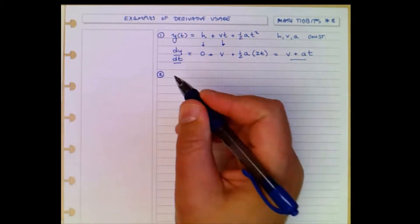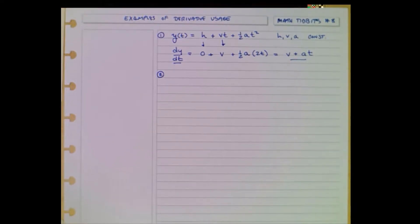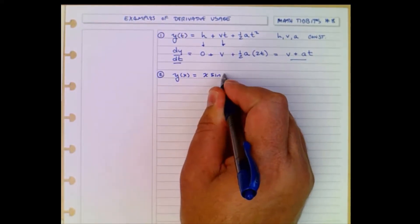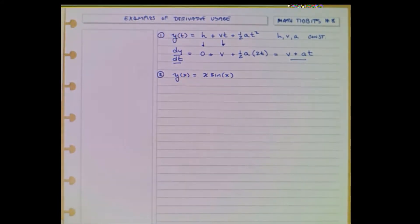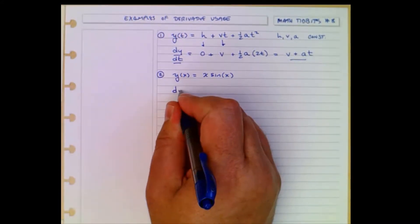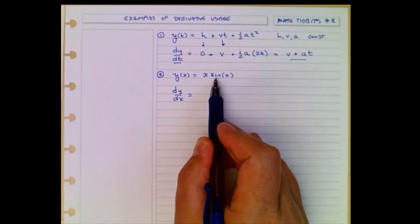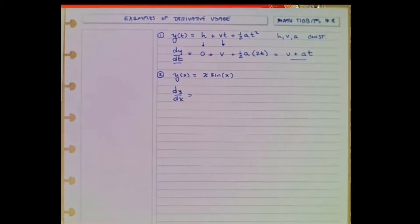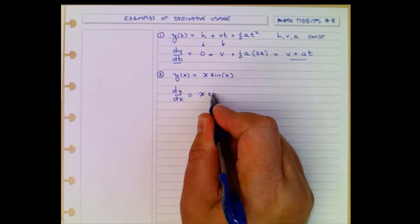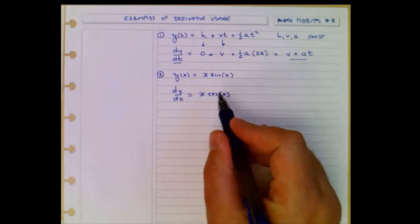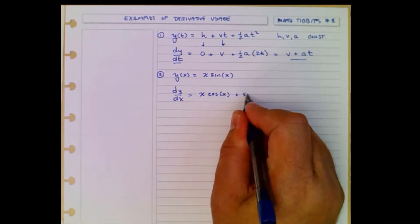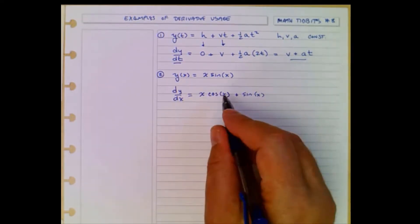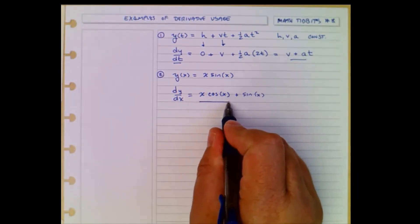Second case, I'm going to take a product here. So y of x is equal to x times sine of x. The product rule for derivatives requires us to take the first times the derivative of the second plus the second times the derivative of the first. So the first is x, derivative of the second is cosine x, and then we take the second plus sine x times the derivative of the first. The derivative of the first is 1, so we're finished here.